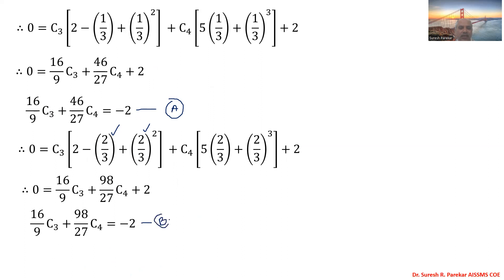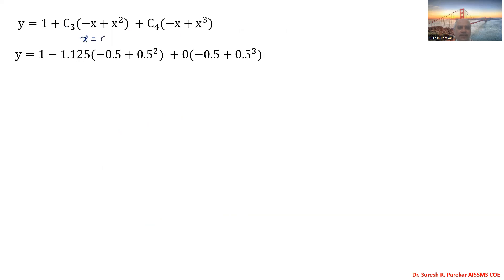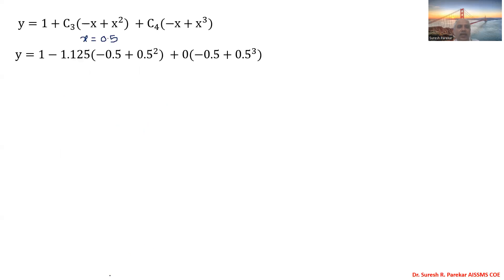Solving equations (a) and (b) simultaneously, we get c3 = -1.125 and c4 = 0. From c2 = -c3 - c4, we get c2 = 1.125. Now substituting c3 = -1.125, c4 = 0, and x = 0.5 into the equation for y, we get y(0.5) = 1.28.